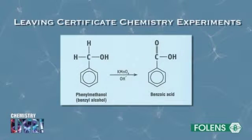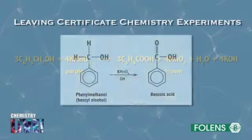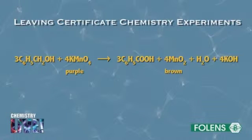In this experiment you will prepare benzoic acid by oxidising phenylmethanol, which is also called benzyl alcohol, using potassium permanganate in the presence of the base sodium carbonate. The balanced equation for the reaction is shown on the screen. There are 7 main stages in carrying out this experiment.